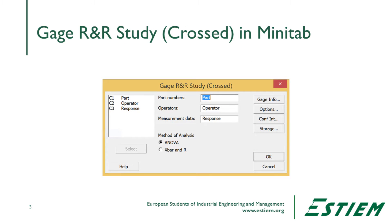When we open the Minitab window, there are three things we put in: the part numbers, the operator or the name of the person recording it, and the measured data — the response or what they've actually recorded. The method of analysis is ANOVA, which allows us to see as much information as possible, including the interaction between the parts and the measured operator — whether the person actually measures the same part each way at the same time.